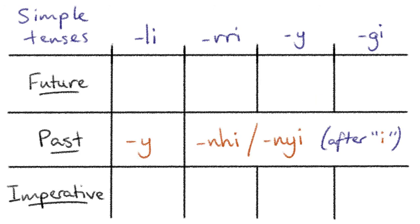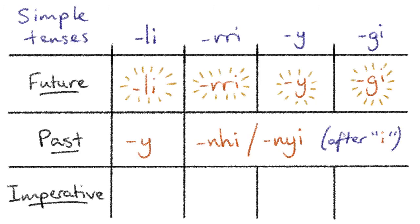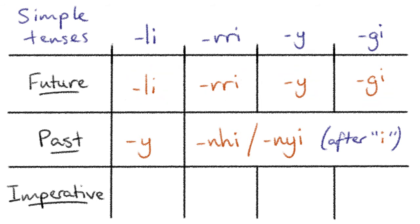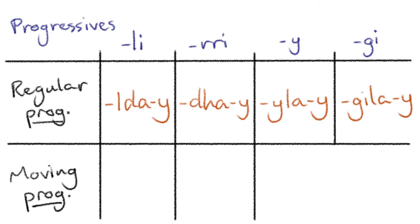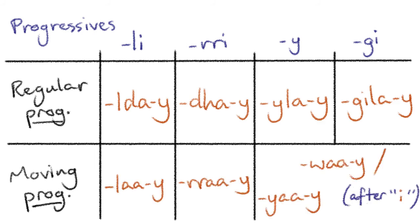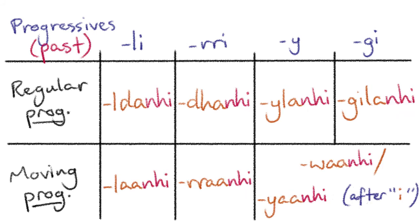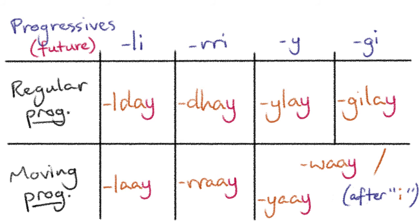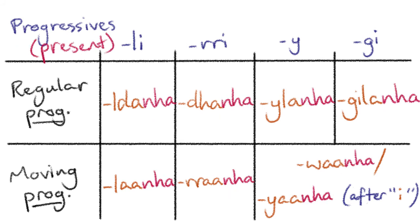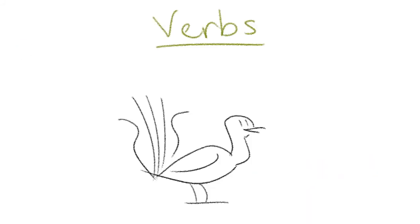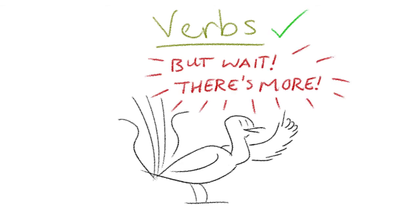There are two simple tenses — the past and the future — the latter of which is also the dictionary form of verbs, and there is also a simple imperative mood for giving commands. There are also two progressive aspects: the regular progressive and the moving progressive. Both progressive aspects are conjugated for past and future tense, as well as the imperative, and a unique present tense suffix that only appears on progressives. That's pretty much all the basic information you need to know about conjugating verbs, but it is far from the full picture.